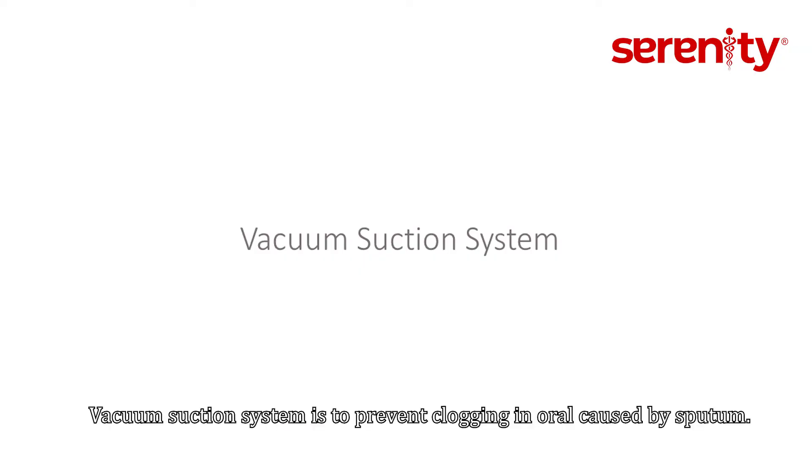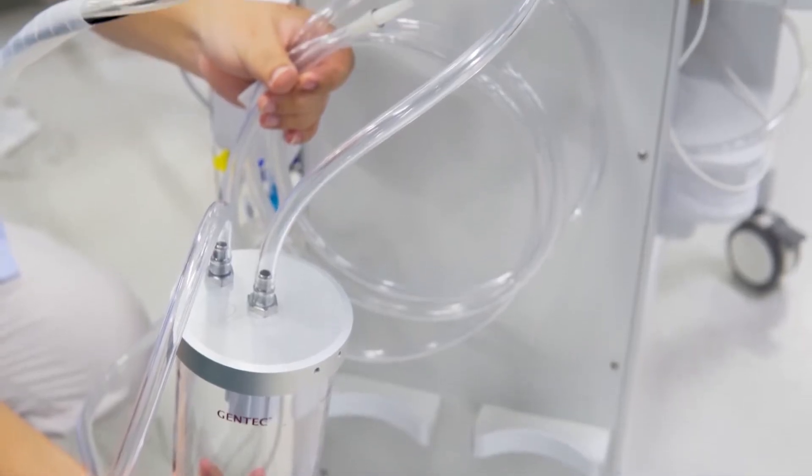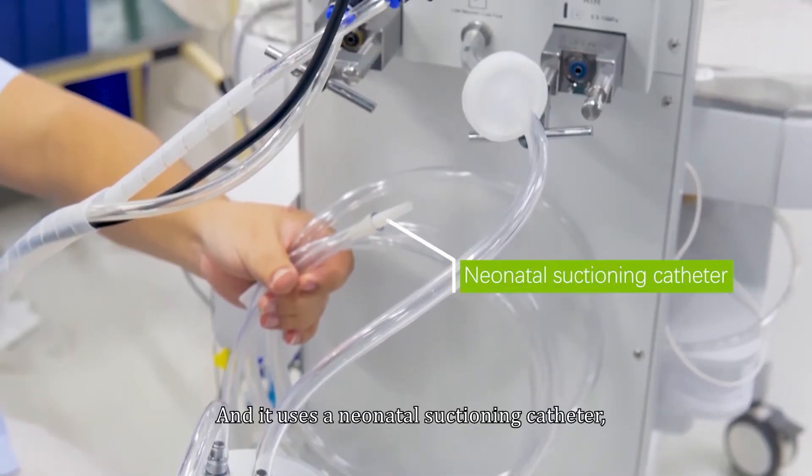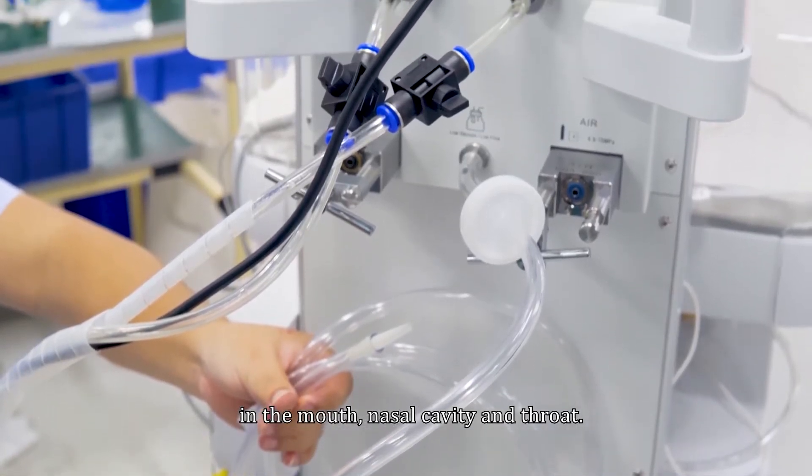Vacuum suction system is to prevent clogging in oral cavity caused by sputum. This system utilizes an effusion tank which is attached to the suction connector and uses a neonatal suctioning catheter to suck the meconium or amniotic fluid in the mouth, nasal cavity and throat.